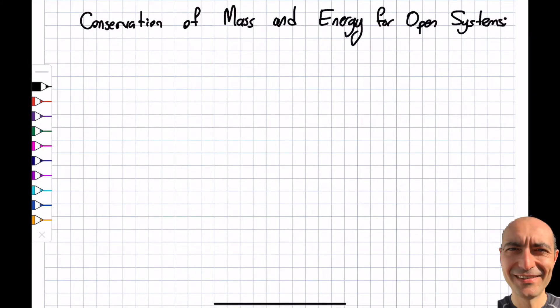All right everybody, welcome to Module 5. In this one, we are looking at the conservation of mass and energy for open systems. Before, in Module 4, we just looked at conservation of energy, we didn't look at mass. The reason was because it was a closed system - I don't have any mass leaving or entering my system, so it was a little easier.